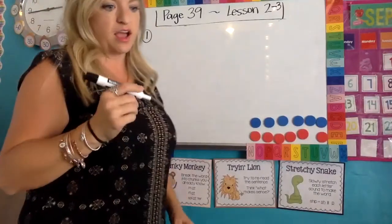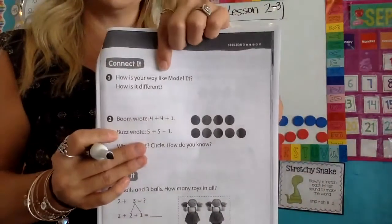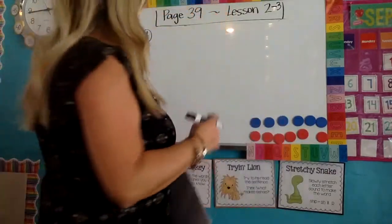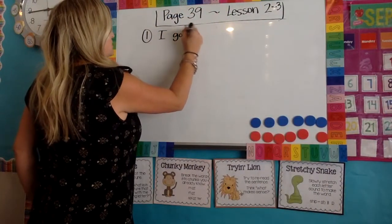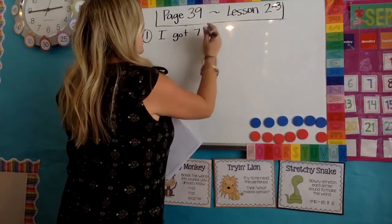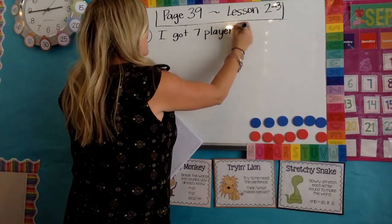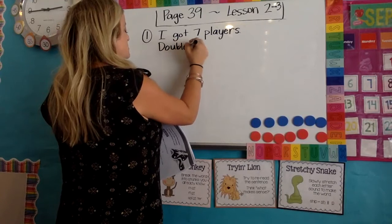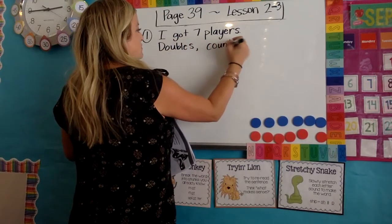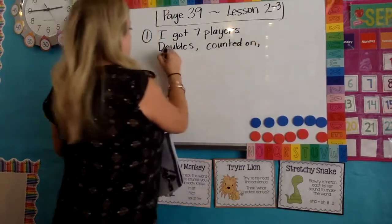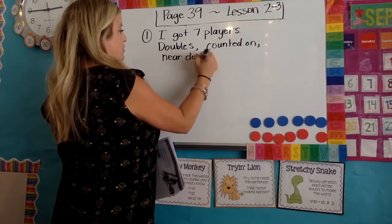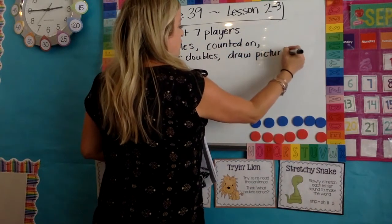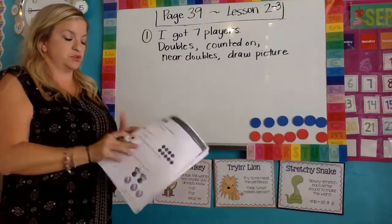Number one is: how is your way like the model, how is it different? It's just wanting you to compare other people's way of thinking and other strategies to solve these answers differently than your own. Hopefully you got seven, so you could say how is it like it — well, hopefully you got the same answer, seven players. You could say I used doubles, I counted on, I did near doubles, I drew a picture, or some people use their fingers. Whatever works for you — any of those would work for number one.